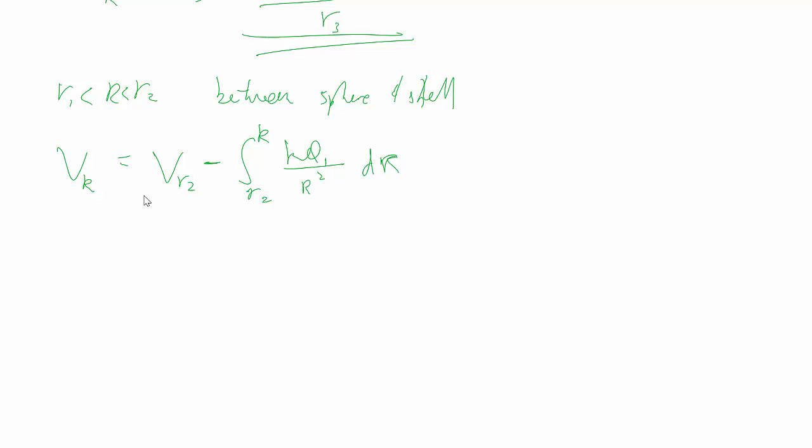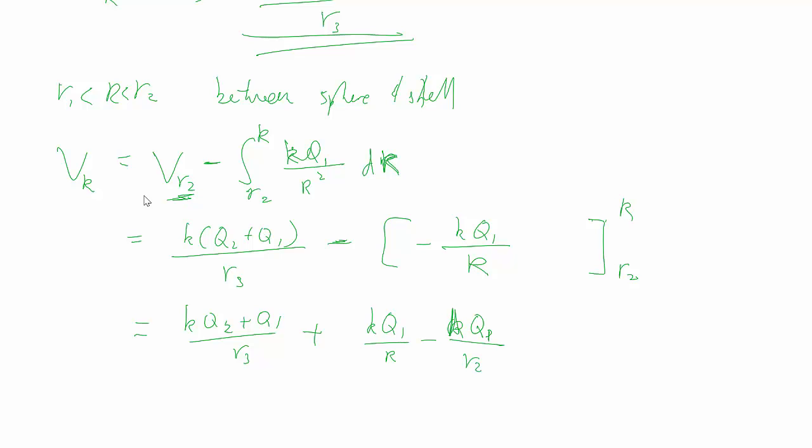Again, because we have the radial direction dotted with each other, they work out nicely to give us just dr. Vr2, this one we take from the last result, minus, and this we've basically already done, it's the same as the last one. Subbing in the limits of integration, cancelling out that negative sign, that's what we get.